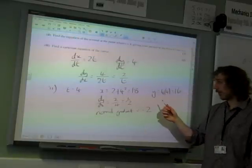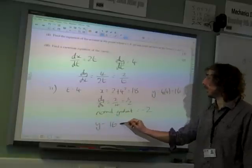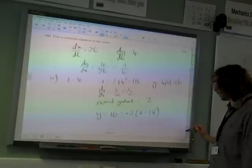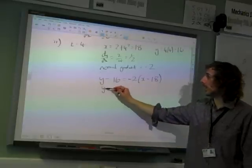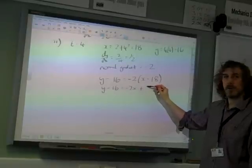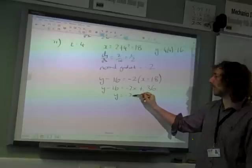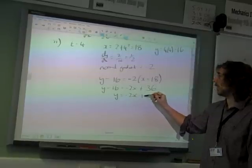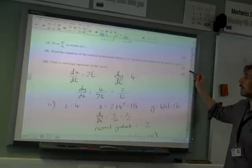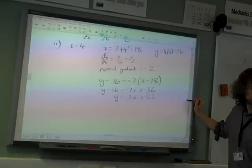So we've got gradient x and y. So y minus y1 is m times x minus x1, giving us y minus 16 is minus 2 times x plus 36. So y is minus 2x plus 52. And we had to give it in that form. Do we agree with that? Are we happy with that?